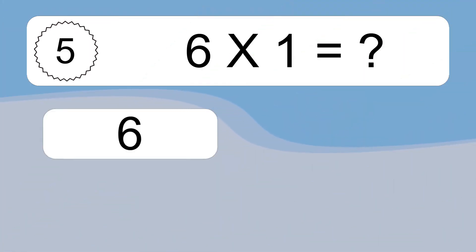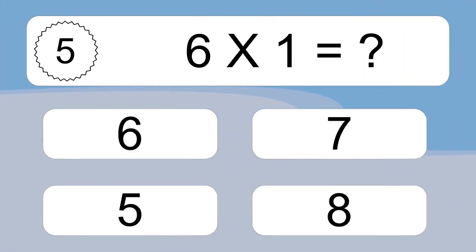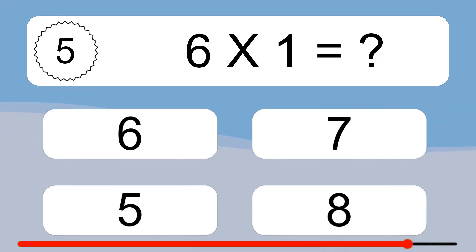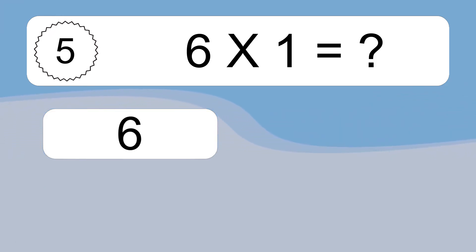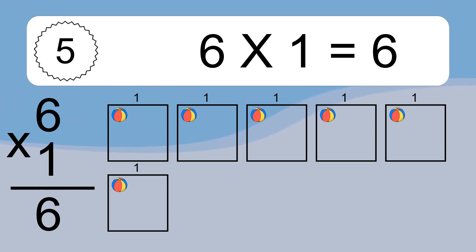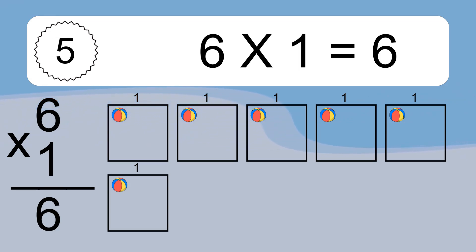Six times one equals what? Six times one equals six. We have six boxes, and each box has one colorful ball inside. If you count all the balls in all the boxes together, you will have six times one balls. This equals six balls.